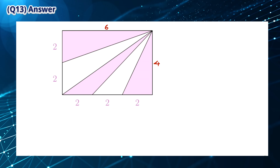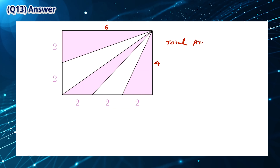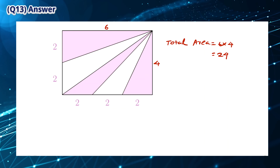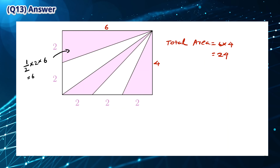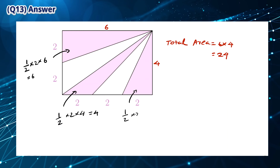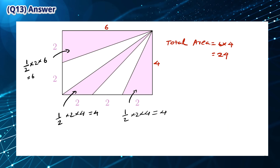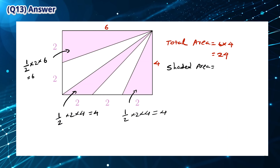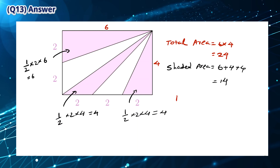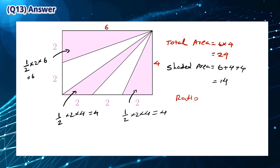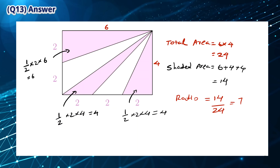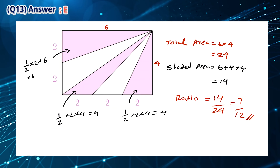The total area of the rectangle flag is equal to 6 multiplied by 4, which is 24. The area of the first shaded triangle is 6, the next shaded triangle is 4, and the third shaded triangle is 4. The total shaded area is 6 plus 4 plus 4, which equals 14. This means the ratio of the shaded area is 14 divided by 24, which simplifies to 7 over 12. The answer is E.